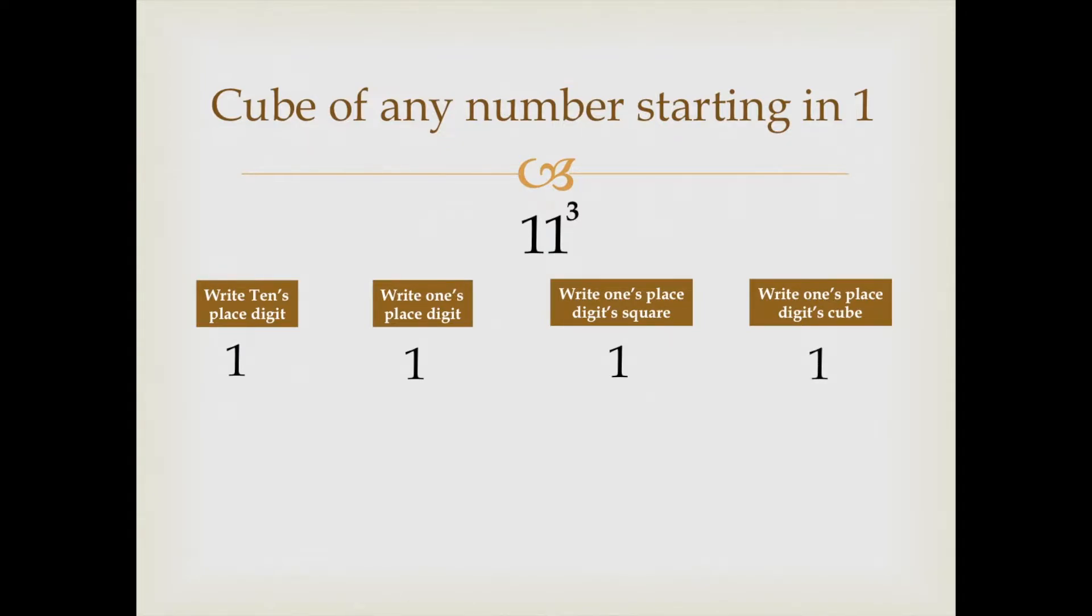Now we ignore the first and last digit in these 4 numbers and take the middle 2 digits and multiply them by 2. Multiply this 1 by 2 and it comes to 2, write down 2 under 1.